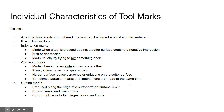Indentation marks, also called nicks or depressions, are usually made by trying to pry something open. Abrasion marks are often seen with pliers, knives, axes, and gun barrels, and sometimes indentation and abrasion marks are made at the same time on the same surface. Cut marks are seen with knives, saws, or wire cutters, usually on things like wire, bolts, hinges, or locks — and also on bone if someone used a saw to cut up a body.